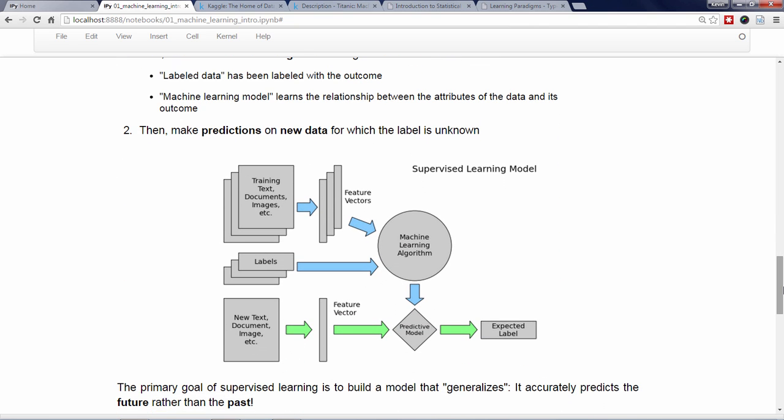Second, you make predictions on new data for which you don't know the true outcome. In other words, when a new email message arrives, you want your trained model to accurately predict whether the email is ham or spam without a human examining it.